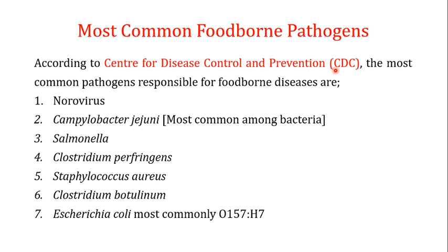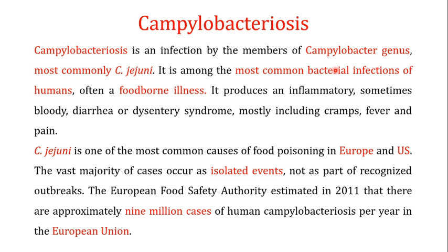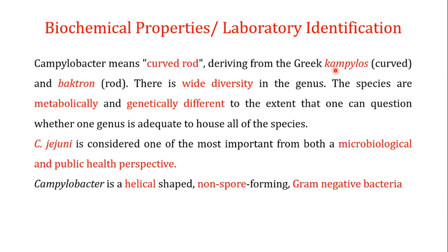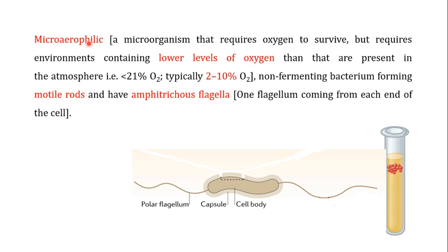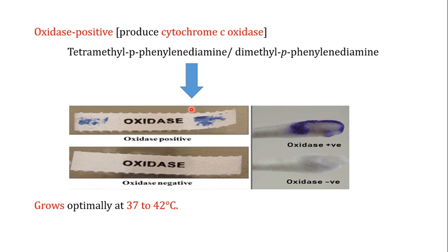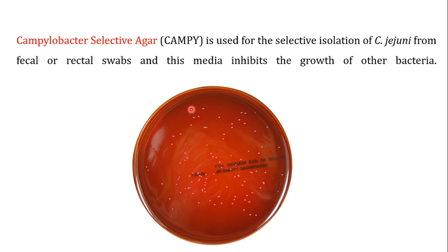I told you about the common pathogens as reported by the Centers for Disease Control and Prevention, and we talked about campylobacteriosis and some important biochemical and morphological properties of Campylobacter jejuni. Campylobacter is a helical-shaped, non-spore-forming, gram-negative bacterium. It is microaerophilic in nature and has amphitrichous flagella. It is oxidase positive and grows optimally at 37 to 42 degrees Celsius. Campylobacter selective agar is a selective medium for isolation of C. jejuni from other bacteria.